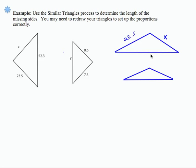So I'm going to do that here. I have sides of x, 23.5, and 52.3, and their orientation is extremely important. That's why we redraw them, so that you can see which sides are proportional to each other.